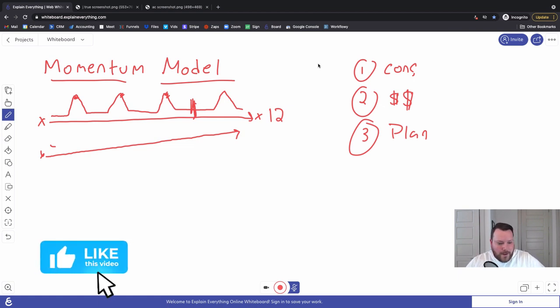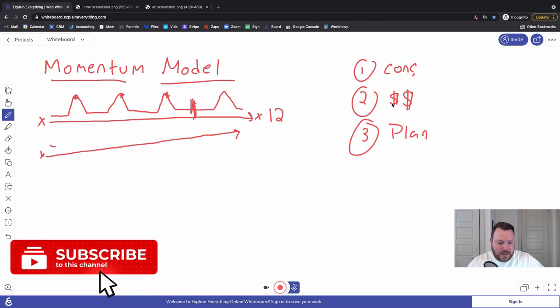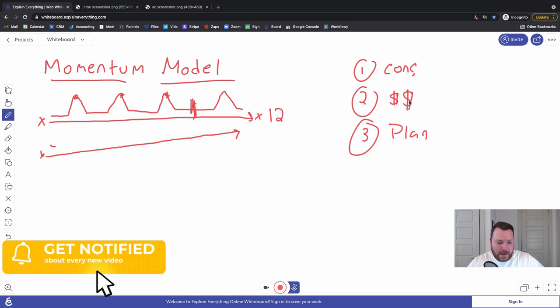So consistency, continuing to be able to afford you as a producer, and having some kind of plan of action. This is basically what we have some of our clients do.